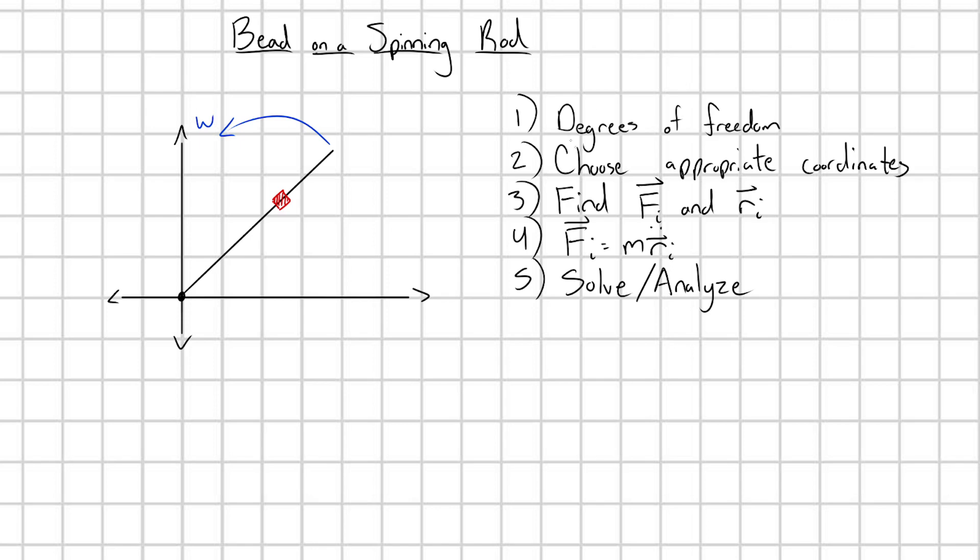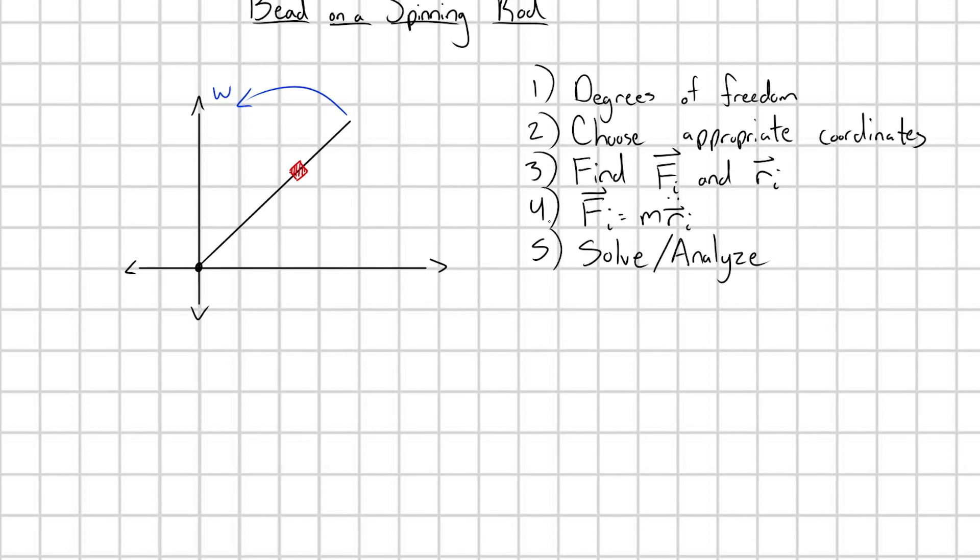The first thing that we're going to do is find the degrees of freedom of our system. We want to track this bead. To find the degrees of freedom of the bead, we use the formula D equals 3N minus C. N refers to the number of objects we're trying to track. C refers to the number of constraints. We have one bead, so N equals one.